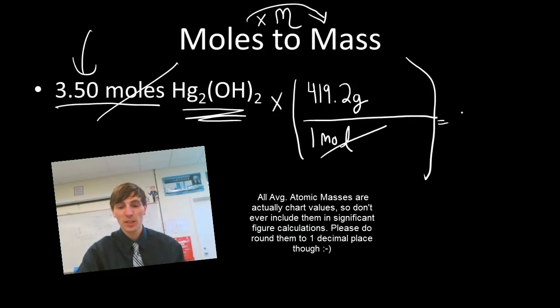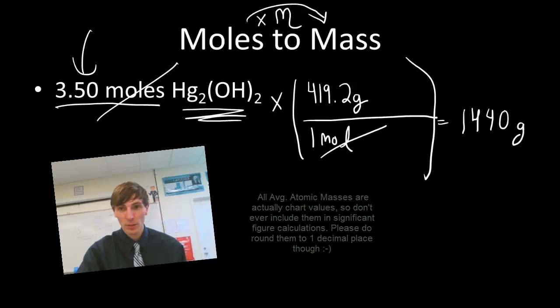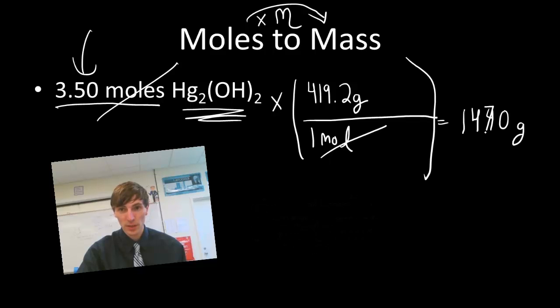I punch in my calculator, I get 1467.2. I'm going to round to 1,470 grams. I'm going to round to 3 sig figs, 1,470 grams of Hg2OH2. So we can use this moles to mass. We can use the molar mass. And we can end up multiplying by our converter.